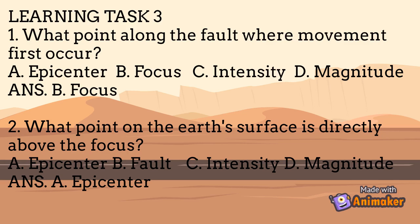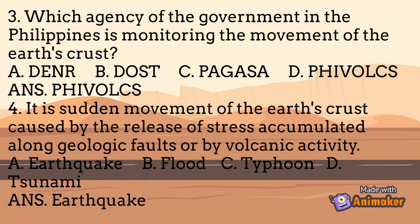Number 3: Which agency of the government in the Philippines is monitoring the movement of the Earth's crust? A. BENRB, B. BOSTC, C. PAGASA, D. PHIVOLCS. Answer: PHIVOLCS. Number 4: It is the sudden movement of the Earth's crust caused by the release of stress accumulated along geologic faults or by volcanic activity. A. Earthquake, B. Flood, C. Typhoon, D. Tsunami. Answer: Earthquake.